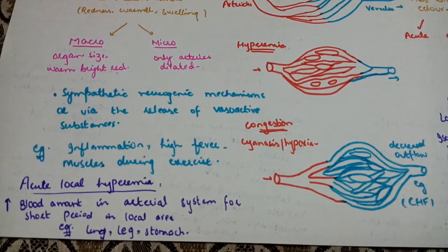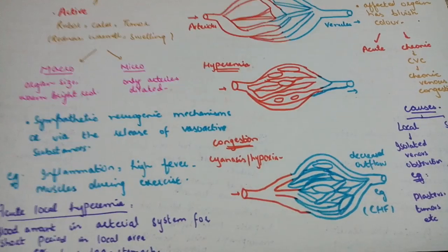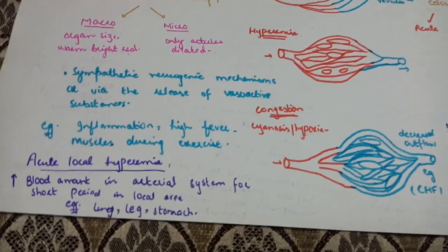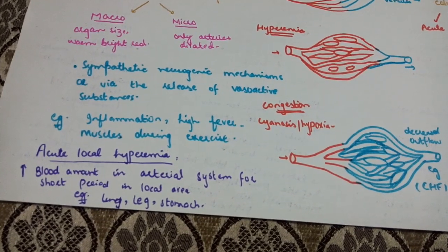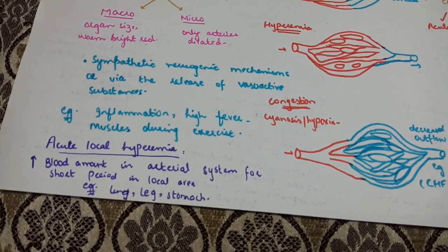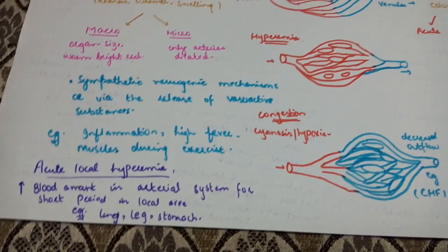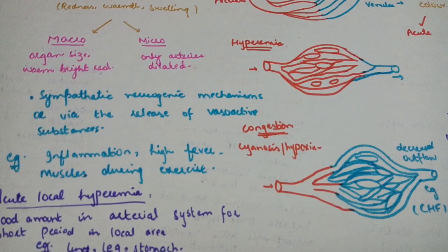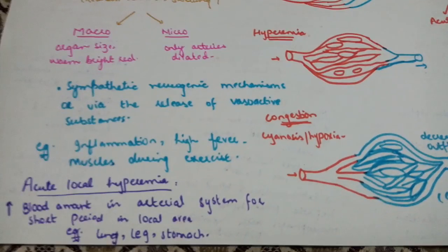Why are vessels dilated? Due to sympathetic neurogenic mechanisms and the release of vasoactive substances, which leads to increased volume of blood. Causes include both pathological — such as inflammation and high fever — and physiological, such as muscles during exercise.